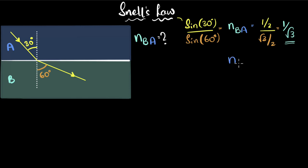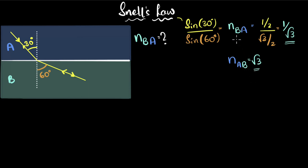What if we asked for the refractive index of A with respect to B? Just reverse the ray of light — now refraction happens in medium A, so the angle of incidence becomes 60 degrees and the angle of refraction becomes 30 degrees. Snell's law gives sine 60 divided by sine 30, which is the reciprocal of before: √3. So the refractive index of B with respect to A is simply the reciprocal of the refractive index of A with respect to B.